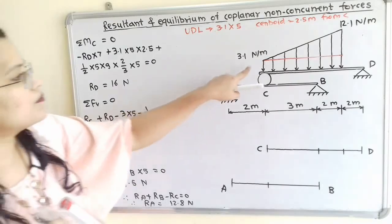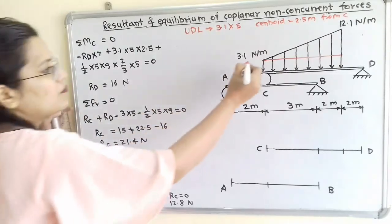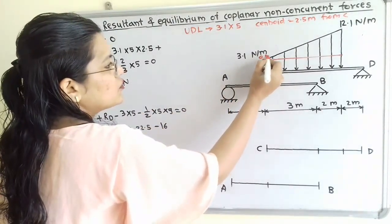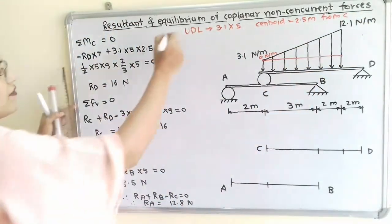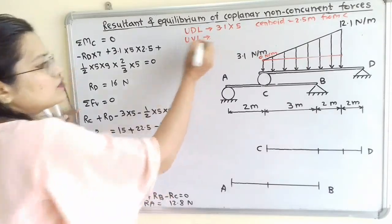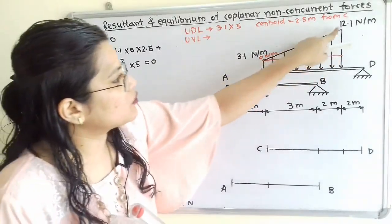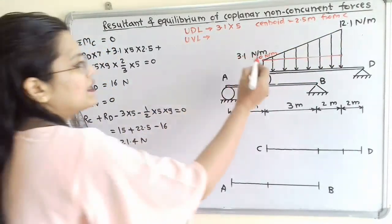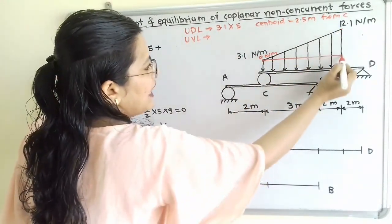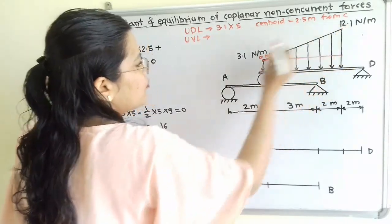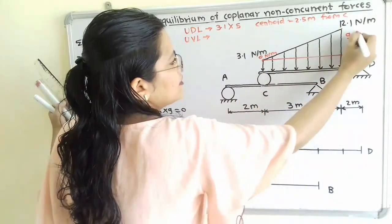The load above the red line is the uniformly varying load, going from 0 N/m up to 12.1 N/m minus 3.1 N/m, that is 9 N/m. The magnitude of this triangular load equals the area of the triangle: half multiplied by base multiplied by height, so half × 5 m × 9 N/m.